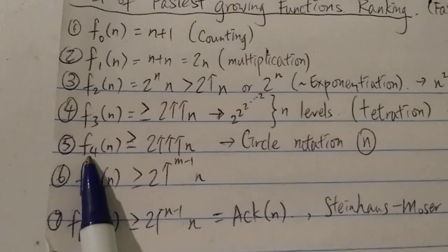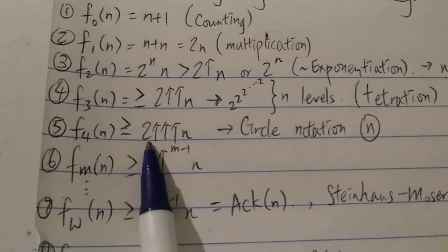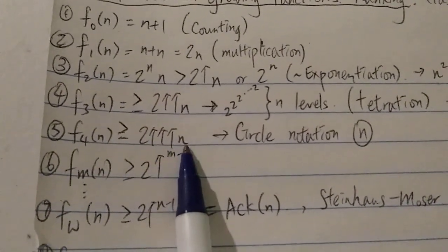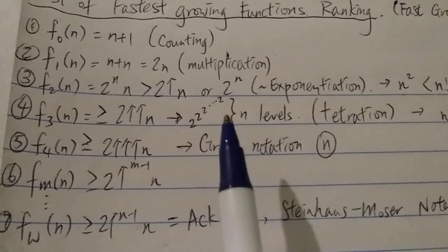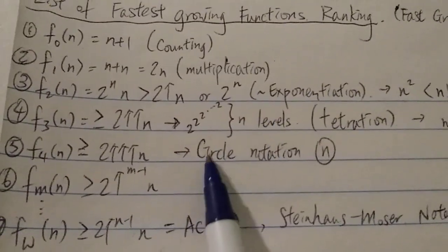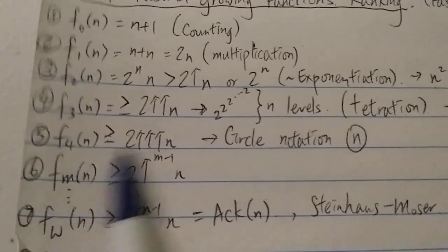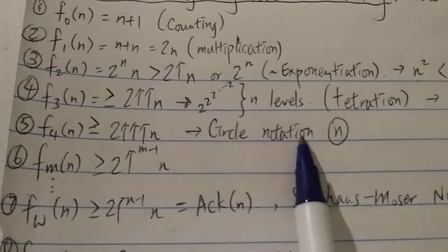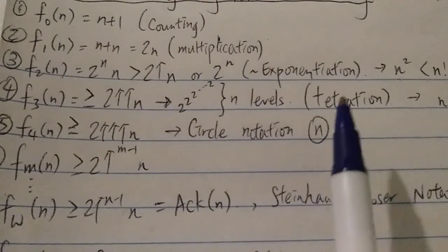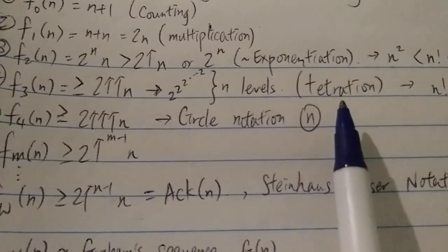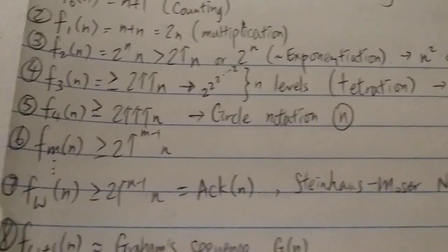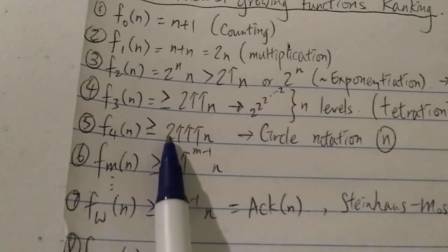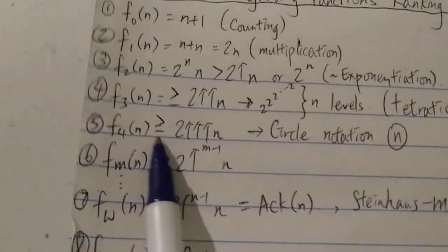And next, number 5, we have F4(n), which is greater than 2↑↑↑n. And this is 3 arrows, so you kind of know what it means. And one of the examples in this group, another example would be the circle notation, which is n in a square, or you can say, some people say n in a pentagon, it's the same thing. And it grows at around 3 arrow or F4(n).